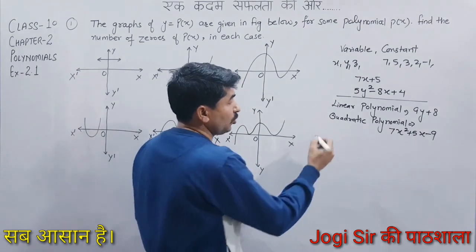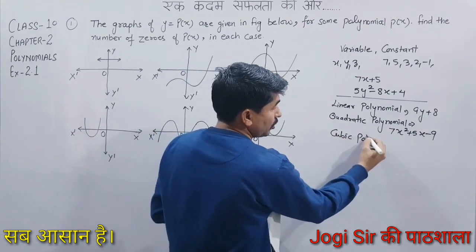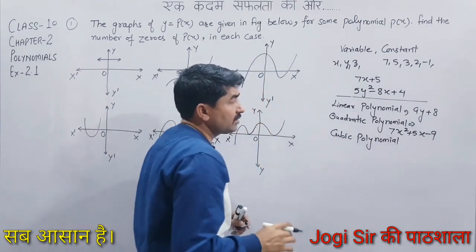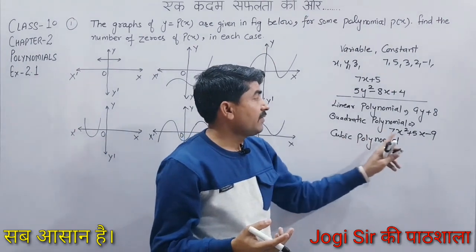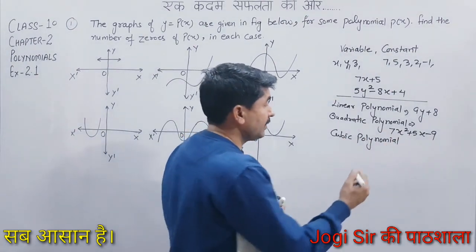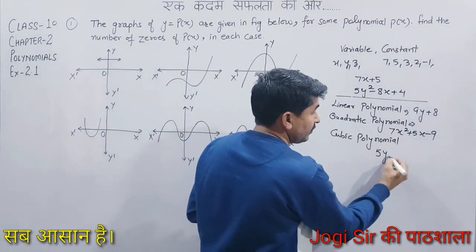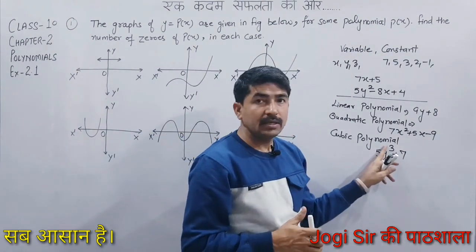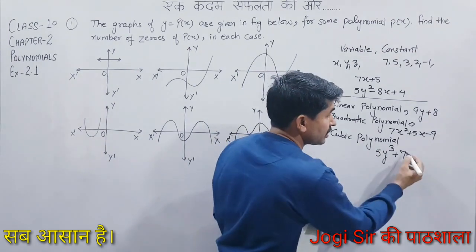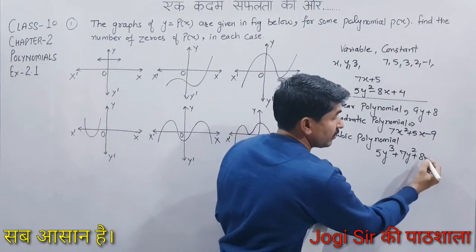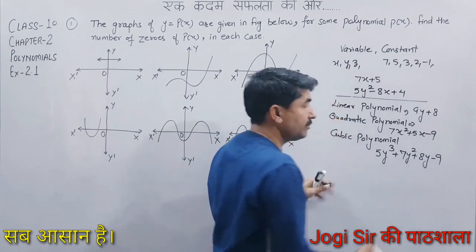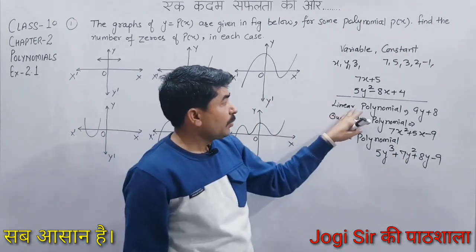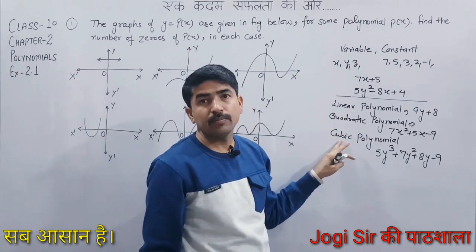Then there is the cubic polynomial, in which the highest degree of the variable is 3. For example, 5y cubed plus 7 — the highest degree is 3. It can also include lower degree terms like 7y plus 8, or 7y squared plus 8y minus 9. So these are the three types: linear, quadratic, and cubic polynomial.